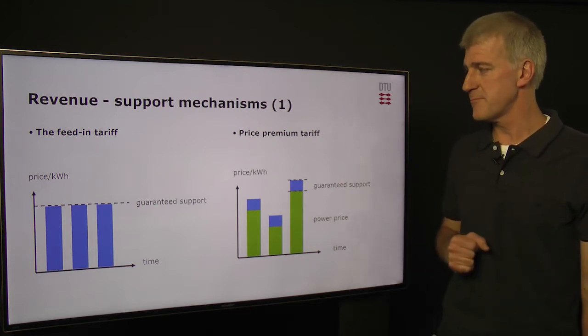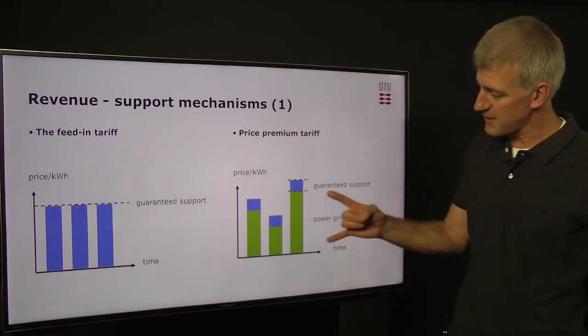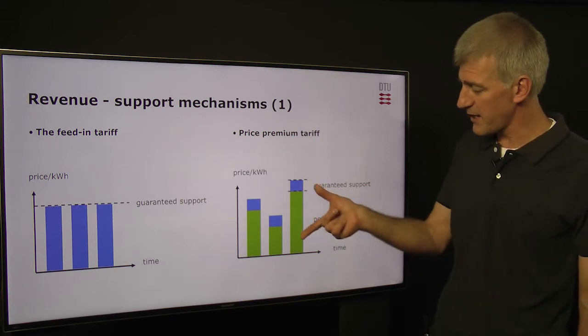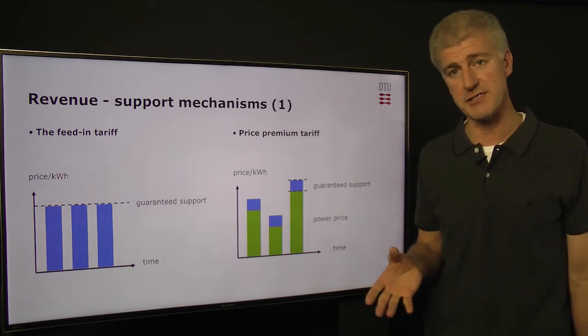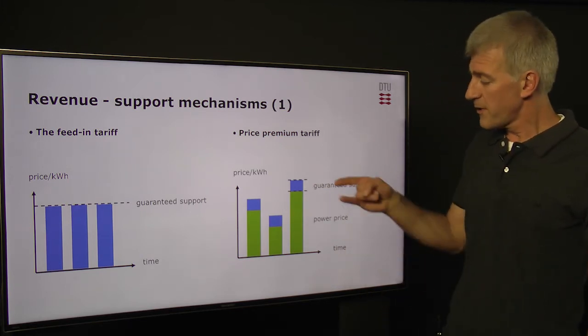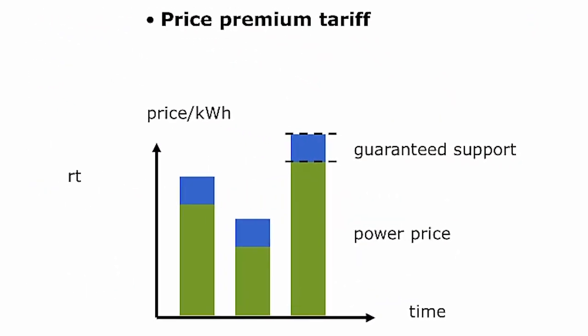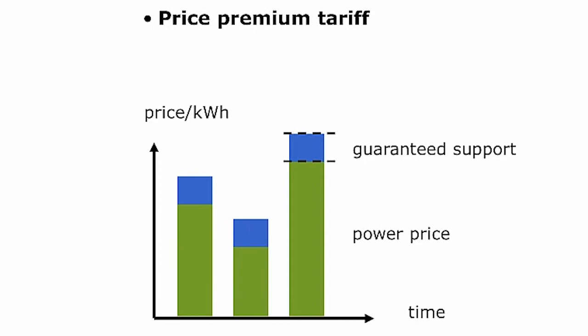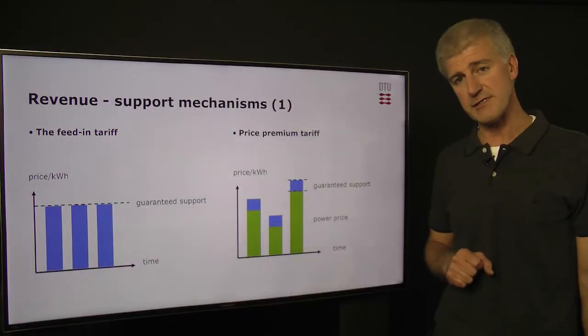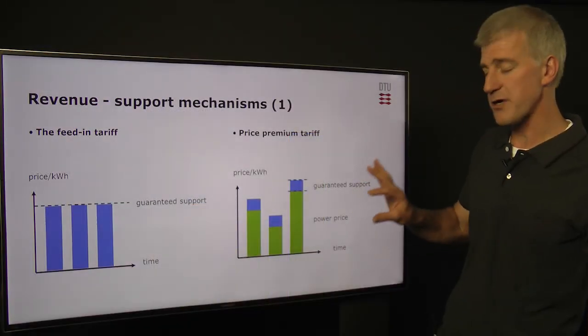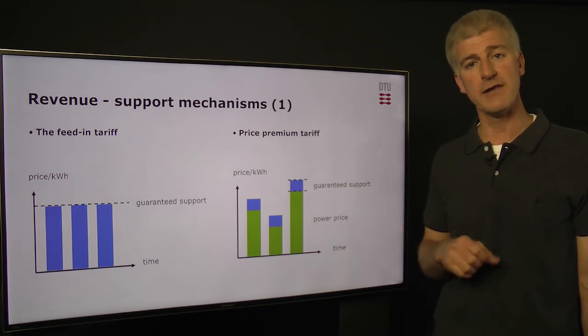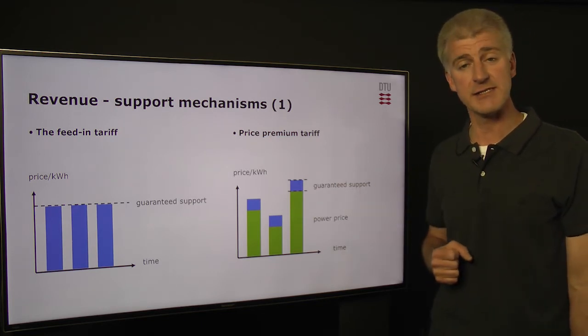Another mechanism is the price premium tariff. Here, we sell into the market and receive a varying price per kilowatt hour for our electricity, but to help us along, we get a guaranteed fixed support on top of that. As an operator, we are a little bit exposed to the variations of the market, but we have this buffer to help us, and this gives a bit more certainty to the investor. It also means that as an operator, we can concentrate more on trying to focus on when the electricity price is highest and get the best revenue.